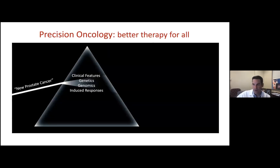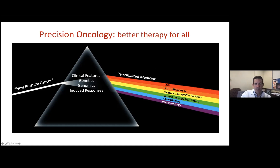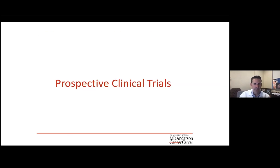Overall, we're trying to come up with better therapy for everyone. We want to take a patient with new prostate cancer — whether localized intermediate-risk or newly diagnosed metastatic — and look at clinical features, genetics, commercially available genomics, and induced responses to predict whether additional therapy is necessary. We want to personalize care and provide the best therapy for each individual patient, whether that's systemics alone, immunotherapy, chemotherapy, or whether we add local treatments. I'll spend the remaining time talking about prospective clinical trials.